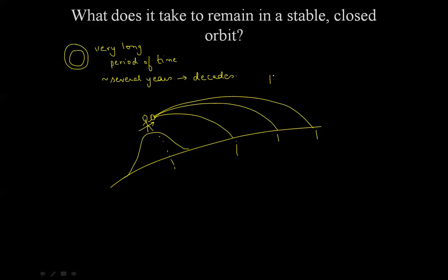This energy you have imparted to the baseball is kinetic energy, mathematically equal to one half of the mass of the object multiplied by its velocity squared. So if you impart some energy to the baseball, its initial velocity as it leaves your hand will be V, equal to the square root of twice the kinetic energy divided by the mass of the baseball. The harder you throw it, the faster its initial velocity, and the longer the range.